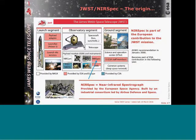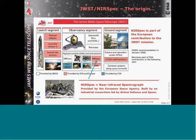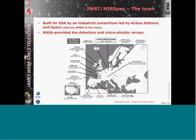JWST is a collaboration between NASA, ESA, and the Canadian Space Agency. For NIRSpec, it was provided by ESA and built by an industrial consortium — mainly European industry. The team includes industrial companies all around Europe and a few science institutes. NIRSpec also has NASA-provided elements: the detectors and the micro-shutter arrays. I'll present the micro-shutter arrays more when we discuss multi-object spectroscopy.